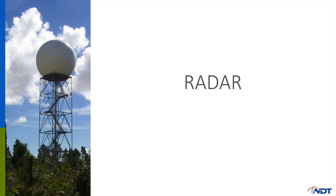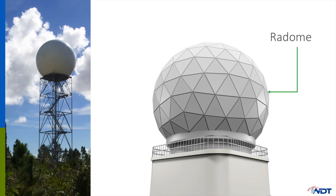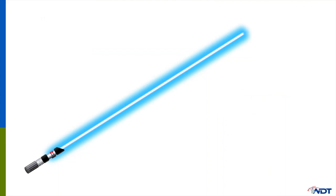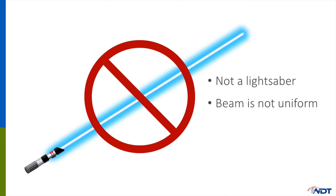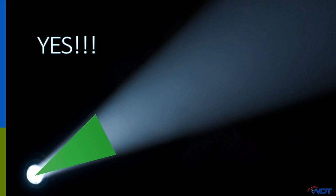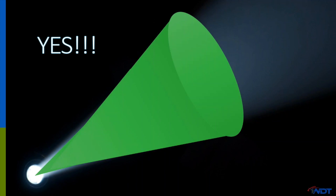A lot of people have seen radars like this and they think they're giant golf balls. Instead, what we're looking at is a fiberglass radome. Inside that is the weather radar. The pattern of the radome was designed to prevent the radar beam from being blocked and also protects the radar from the elements. Radar beams do not look like lightsabers because the beam is not uniform. Instead, a radar beam more resembles a flashlight — as the beam gets further away, it becomes wider and higher.